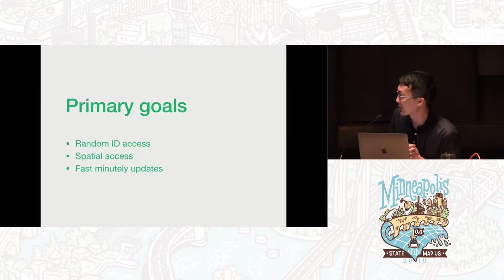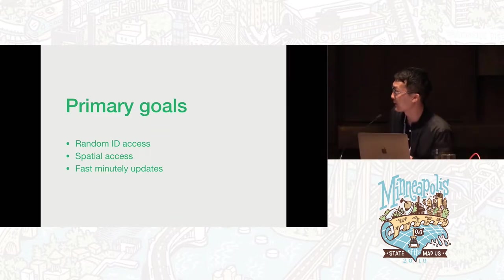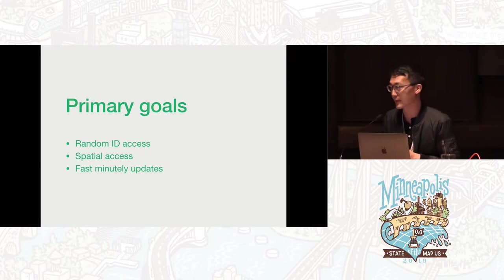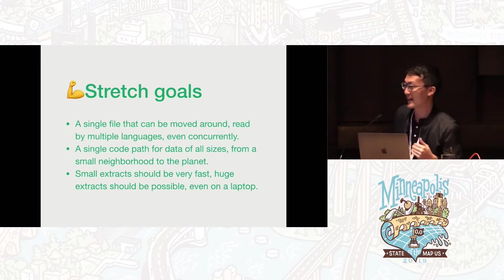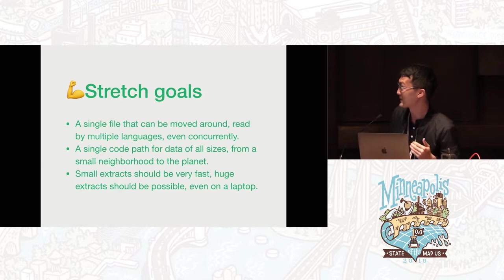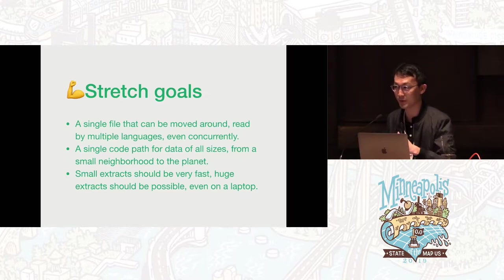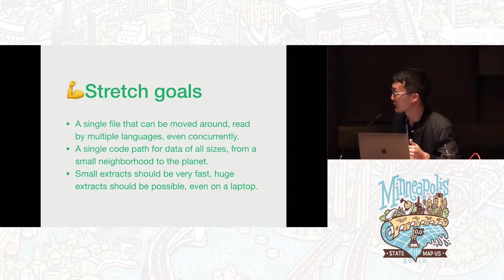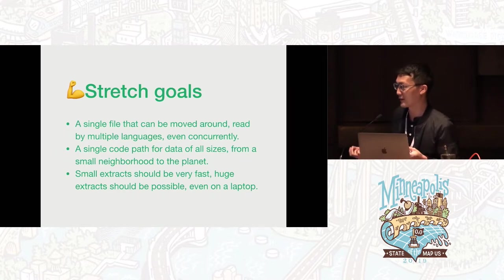My primary goals for creating a new file format are: random ID access so you can look up things by node ID, way ID, or relation ID; and also spatial access — you should be able to write a really fast query that runs over one small area in the file. I also want to support fast minutely updates so you're able to consume changes from OSM.org as soon as they appear. Stretch goals: it would be even better if the entire database was a single file, so you could copy it from your laptop to a server really easily. It would be nice if there was a single code path for all data sizes, so you could prototype on a small area and drop in the planet and it would work the exact same way, without a complicated hosted solution involving multiple computers.